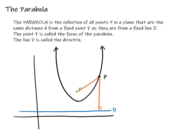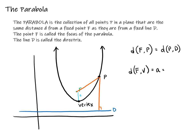Let's write that in algebraic terms: the distance from the focus to the parabola is equal to the distance from the parabola to the directrix. The distance from the focus to the vertex is known as A. Since every point on the parabola is equidistant to the focus and the directrix, the vertex is also equidistant, and the distance from the vertex to the directrix is also A. This value A will be used in our equations of parabolas.